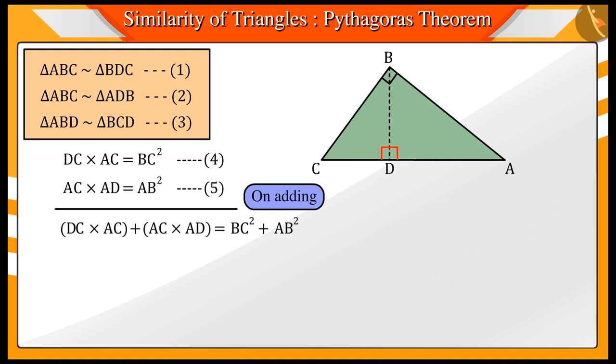You can see that we get a common factor AC here, which we can write like this. Now if we add sides DC and AD, we get side AC.